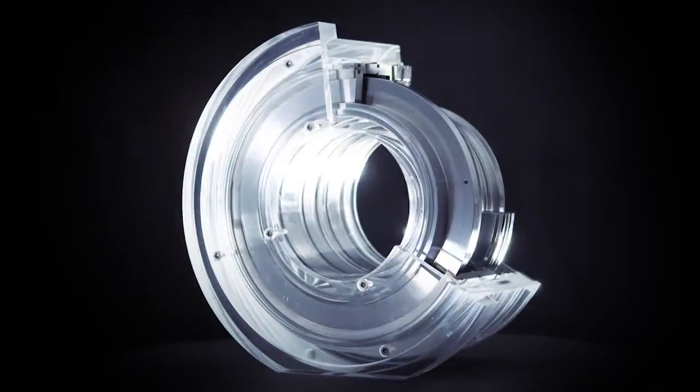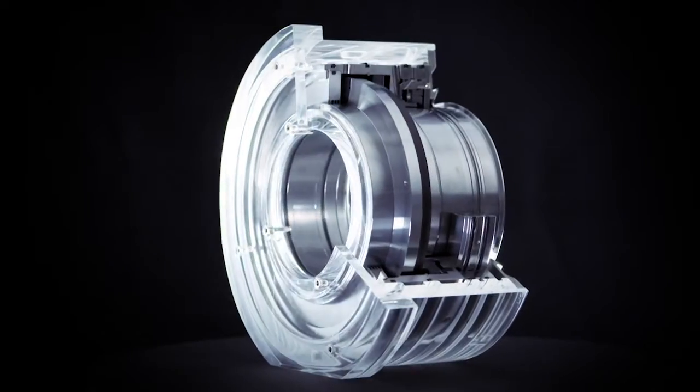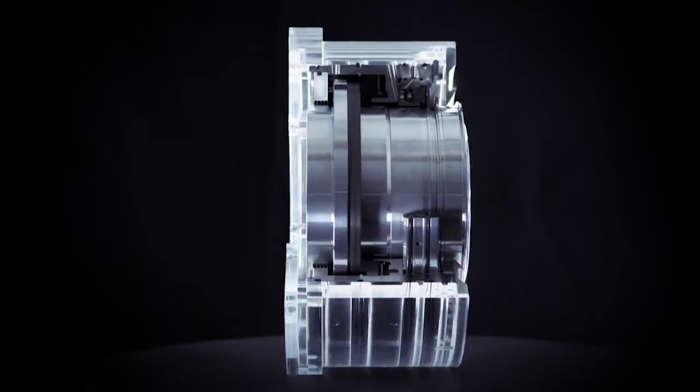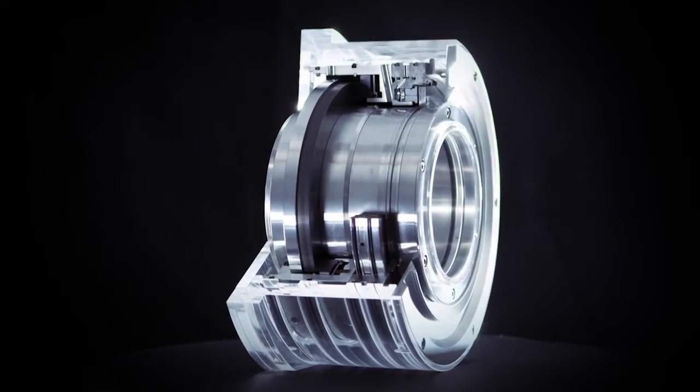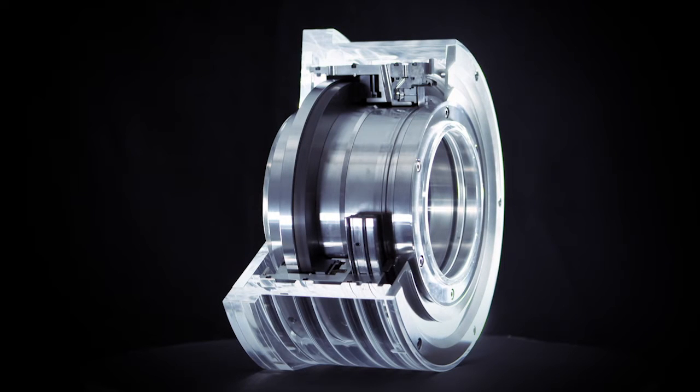The seal is positioned immediately behind the main seal, as demonstrated here with a cutaway model of an Eagle Bergman DGS. Its task is to keep the oil from the bearing away from the main DGS seal, and to do this reliably.